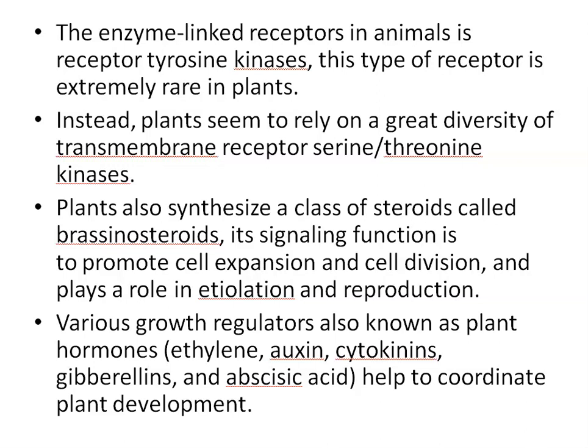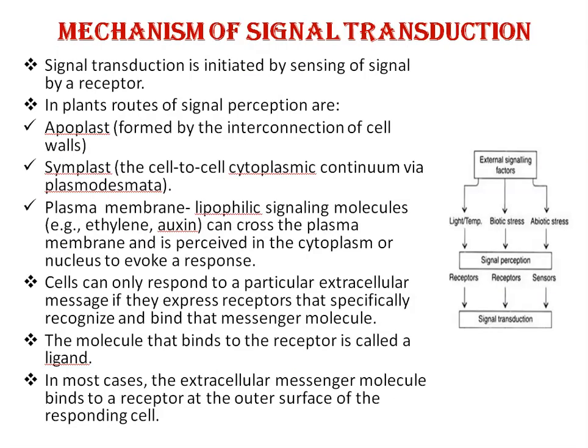Plants also synthesize a class of steroids called brassinosteroids. Brassinosteroid signaling functions to promote cell expansion and cell division, and also plays a role in etiolation and reproduction. Various growth regulators, also called plant hormones — like ethylene, auxin, cytokinin, abscisic acid — have to coordinate in plant development.